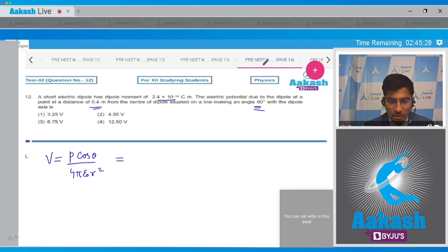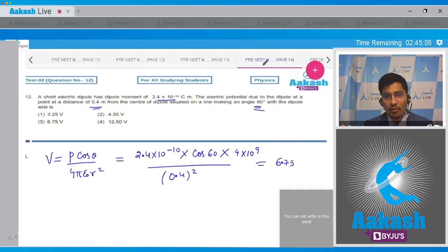Now we can substitute the values. This will be equal to 2.4 into 10 raised to power minus 10 into cos 60 into 9 into 10 raised to power 9, that is 1 by 4 pi epsilon 0's value, divided by 0.4 square, and this will give us a value of 6.75 volts. And hence for this question the correct answer, dear students, is option number 3.